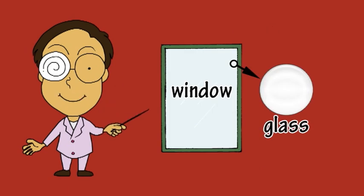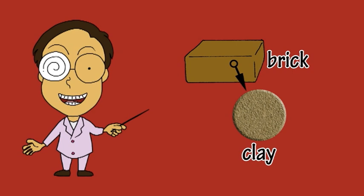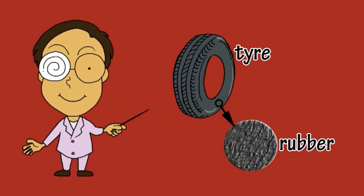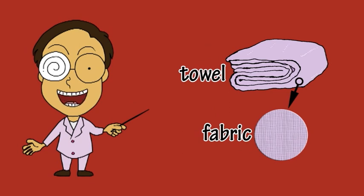This window is made of glass. This brick is made of clay. These steps are made of rock. This tire is made of rubber, and this towel is made of fabric.